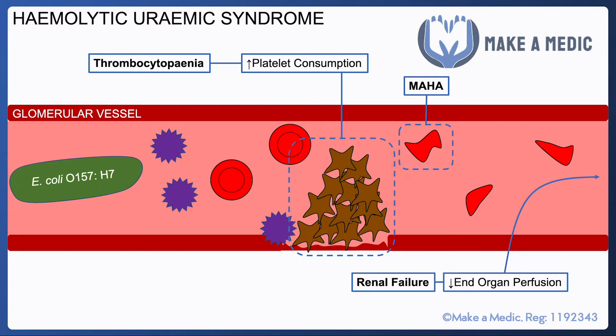This is why in HUS we get the triad of microangiopathic haemolytic anaemia, renal failure, and thrombocytopenia. Going back to the clinical picture, it's caused by a specific type of E. coli which causes diarrhoea, so it often presents in children, and they are likely to have had some sort of history of diarrhoea preceding the development of renal impairment, thrombocytopenia, and MAHA.